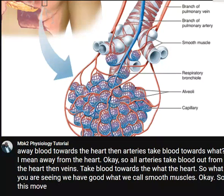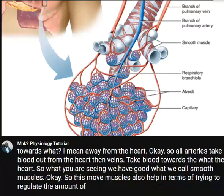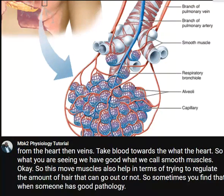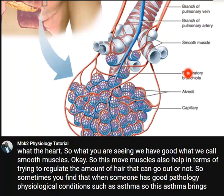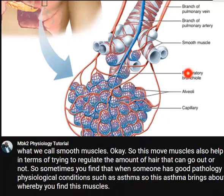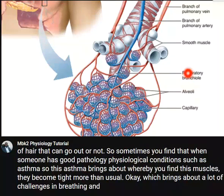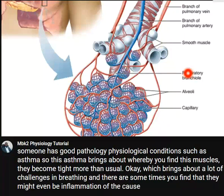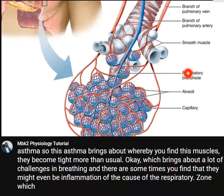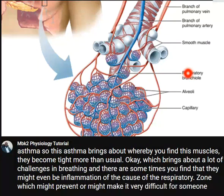These smooth muscles help regulate the amount of air that can go in or out. Sometimes, when someone has a pathophysiological condition such as asthma, these muscles become tighter than usual, which brings about a lot of challenges in breathing. There can also be inflammation of the pores of the respiratory zone, making it very difficult for someone to breathe in and out.